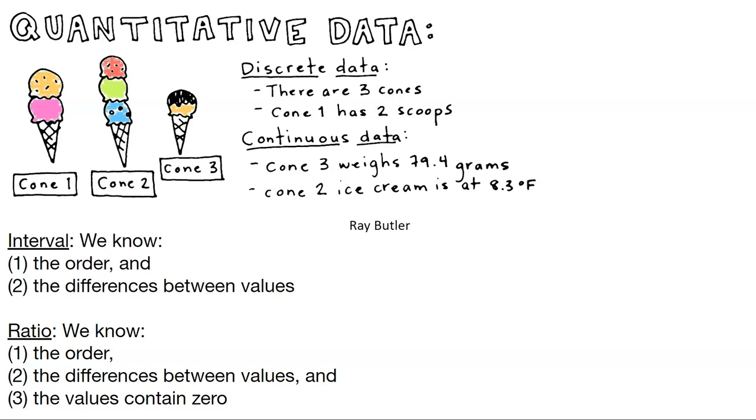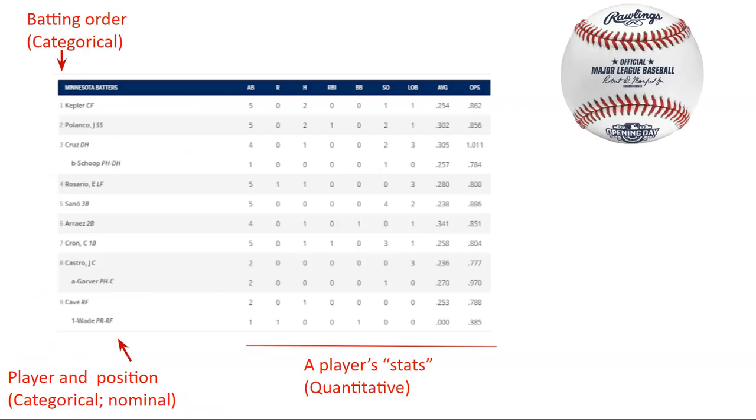Some examples of quantitative data are the interval. If we know the order of the data points and we know the differences between the values, we have an interval. For a ratio, we know the order and the differences between those two values and they also can't contain zero. We can think about intervals and ratios as being two examples of quantitative data.